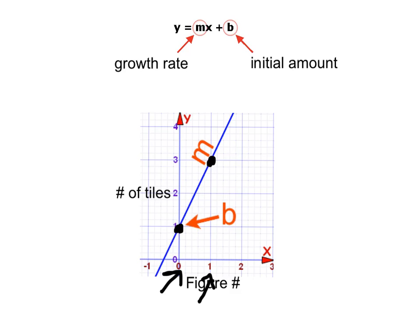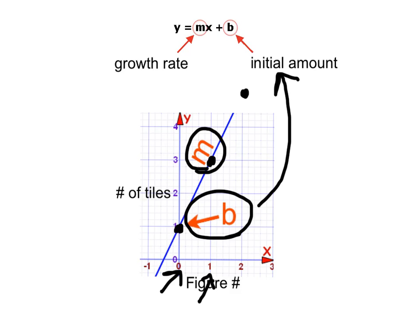Figure two would have five tiles, somewhere over here out of our graph. Looking at our graph, which describes our tile pattern, we can see that the letter b in our formula represents the initial amount in figure zero. And the letter m in our formula represents the growth rate — how many tiles are being added as we increase the figure numbers.